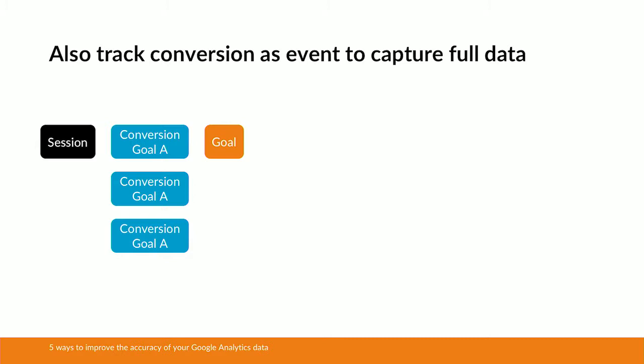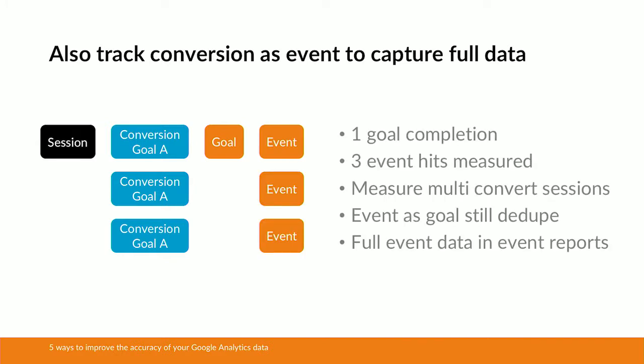A workaround for this would be to also track this goal as an event within Google Analytics. In that very same example we had one goal completion, but if we were tracking that as an event in Google Analytics it would measure as three individual events — so we've covered all bases. Bear in mind that you can set up an event as a goal in Google Analytics, but it will still de-dupe the goal completions metric. So if you're analysing data within the goals section, be mindful it is potentially de-duped. If you want to measure the full number of conversions, use the event tracking data and set up event tracking on your goals in order to do that.